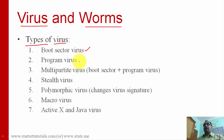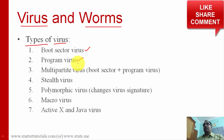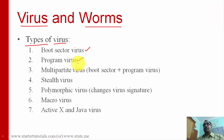The next type is a program virus. This kind of virus gets installed as part of a program, or it changes the associations of programs. A multi-partite virus is a combination of a boot sector virus and a program virus.